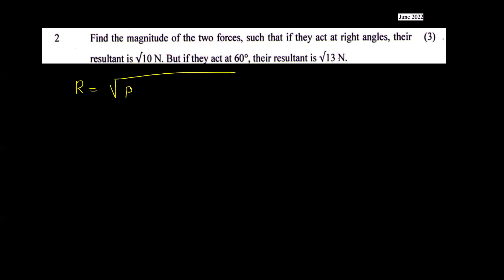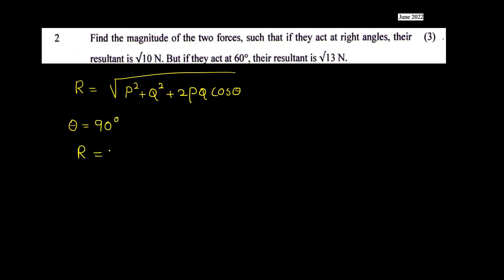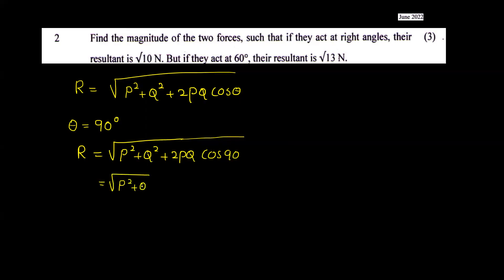The resultant equation is R = root of P squared plus Q squared plus 2PQ cos theta. If two forces act at right angles, theta equals 90 degrees, and cos 90 equals zero, so R = root of P squared plus Q squared = root 10. Squaring both sides gives equation one: P squared plus Q squared equals 10.